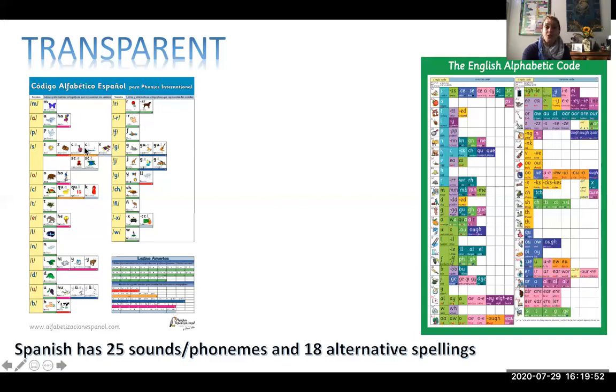Across, you have the other colors, the other letters or group of letters that also represent that sound. Those are called the alternative spelling for that sound. And the same happens in English, but we're going to see that later.